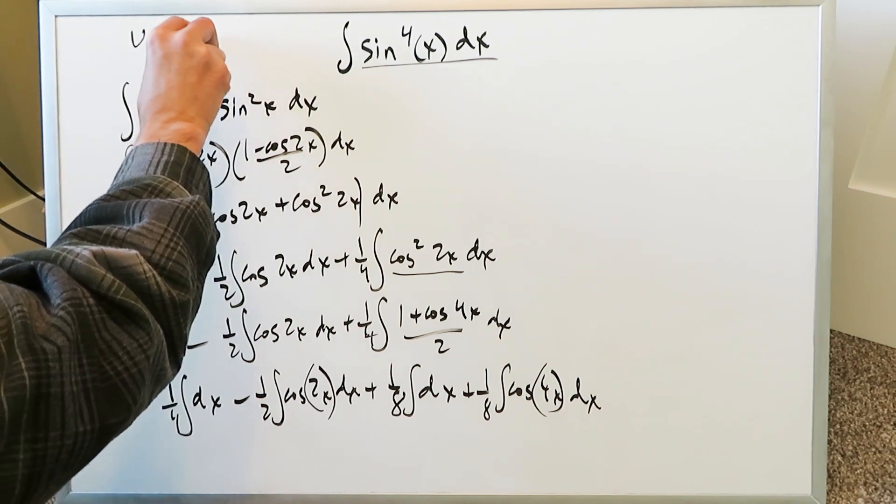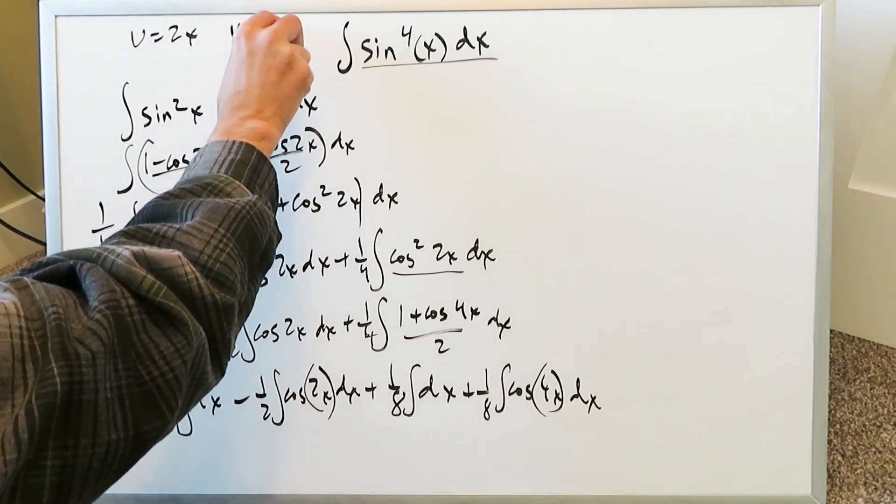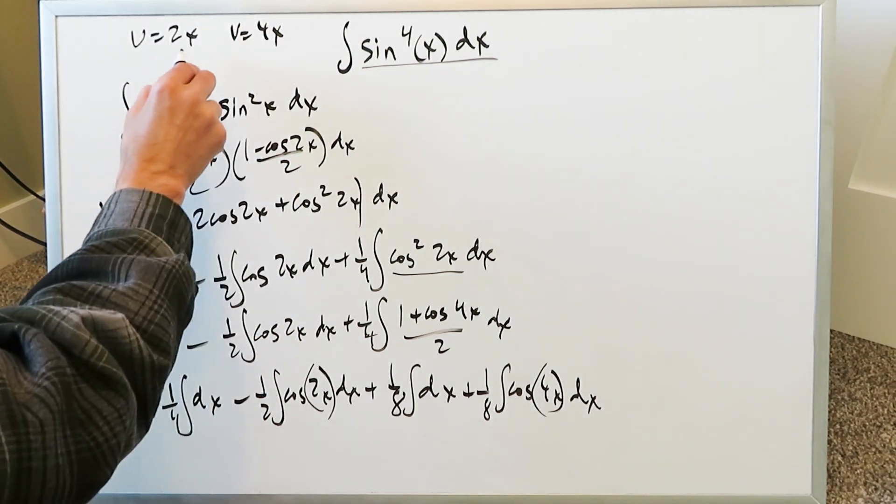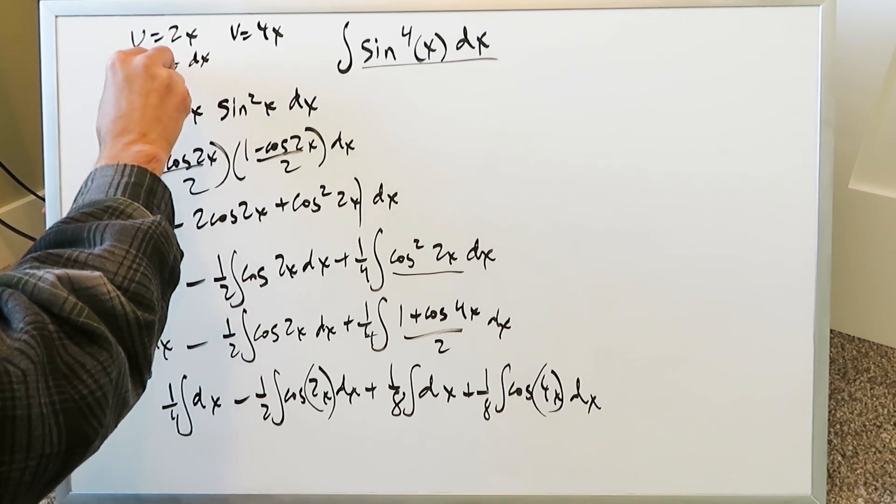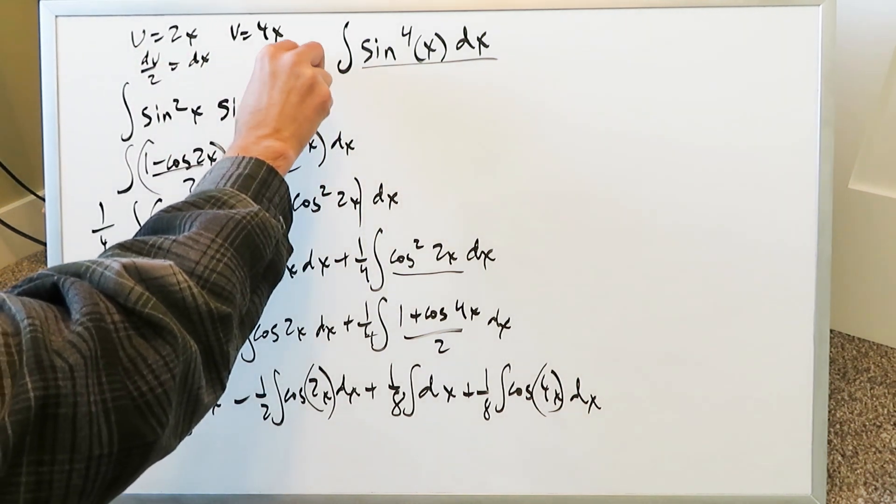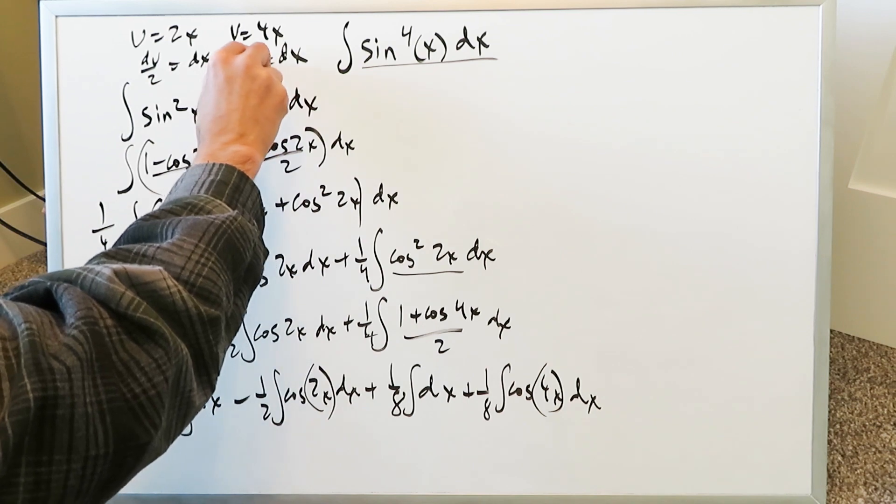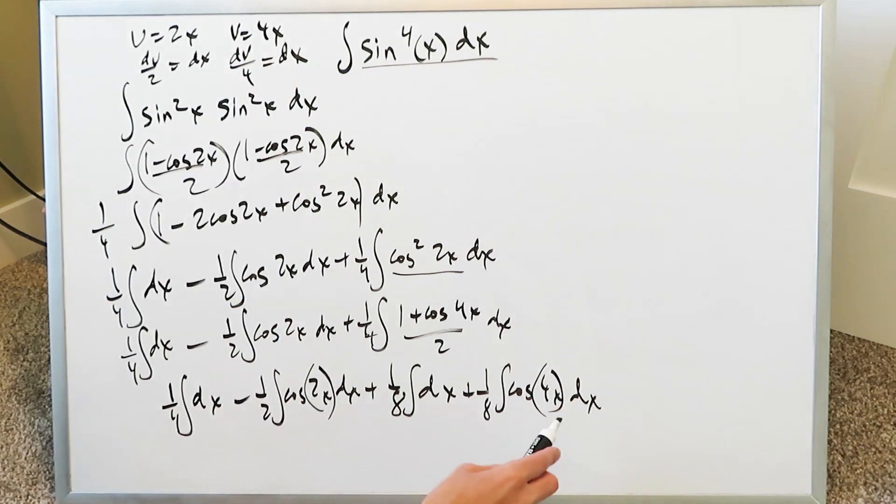If u is equal to 2x and then v is equal to 4x everything will adjust. You know here we'll end up getting dx is equal to du over 2. Here we'll get dx is equal to dv over 4 and everything will play accordingly.